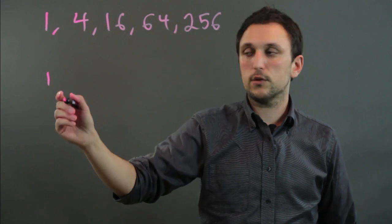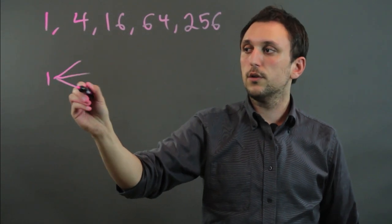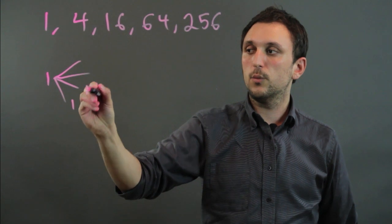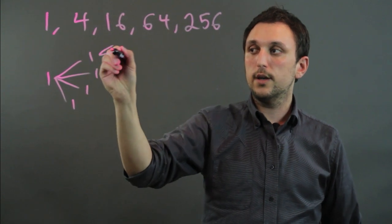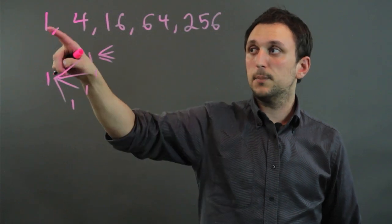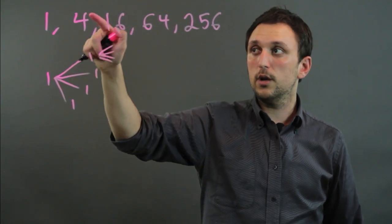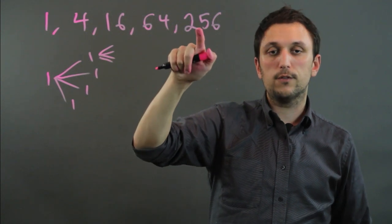So we have that one angry customer who goes and tells four friends, who then go and tell four friends each, and basically at each step we're going 1, 4, 16, 64, 256.